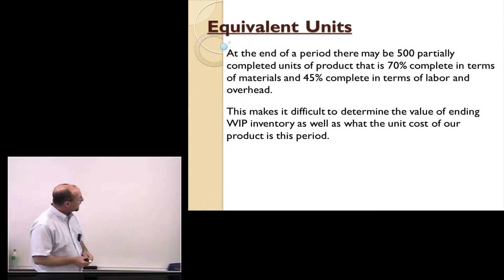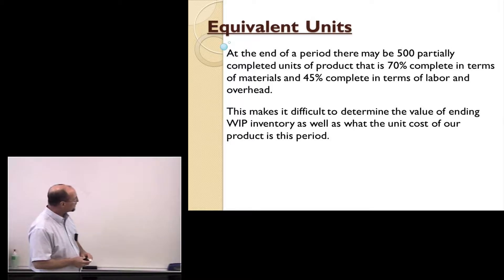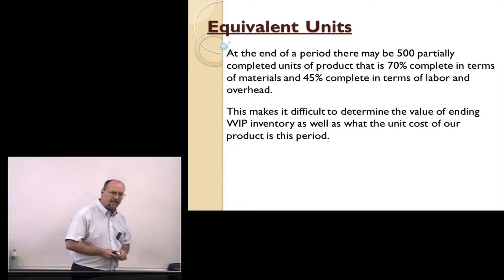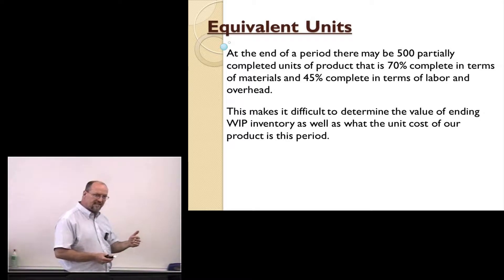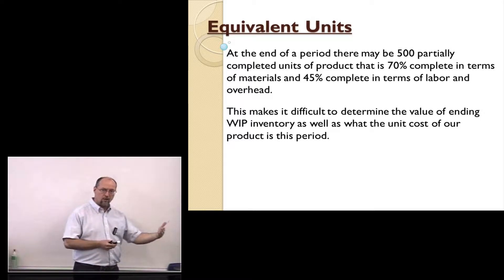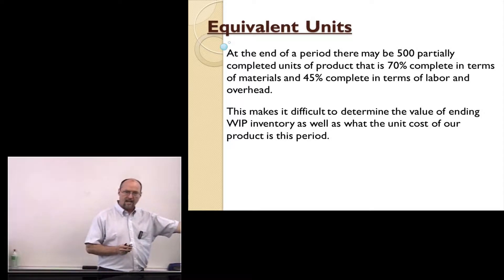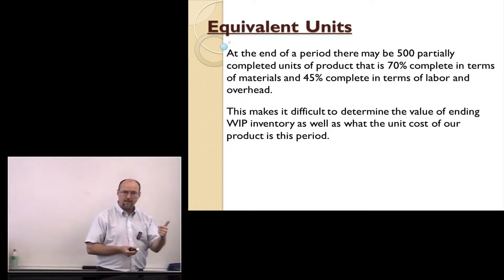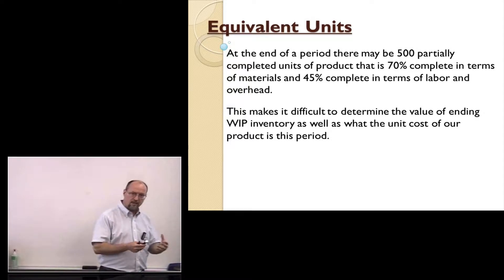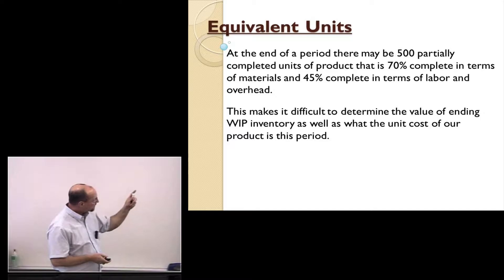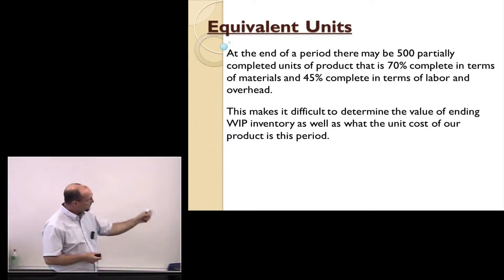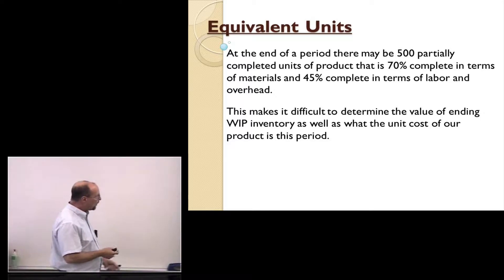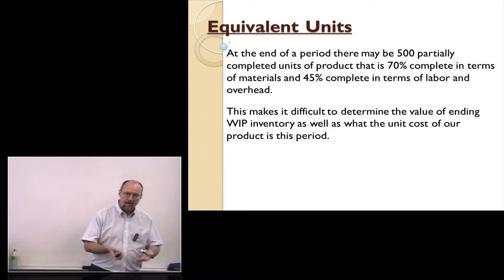At the end of a period there may be 500 partially completed units that are 70% complete in terms of materials and 45% complete in terms of labor and overhead. In a previous chapter, we said that labor and overhead combined are called conversion costs, because we're converting raw materials into a finished product — using skilled labor and machines driven by energy. So 70% complete from a materials standpoint, 45% complete from a conversion standpoint — labor plus overhead together — makes it difficult to determine the value of ending work in process.